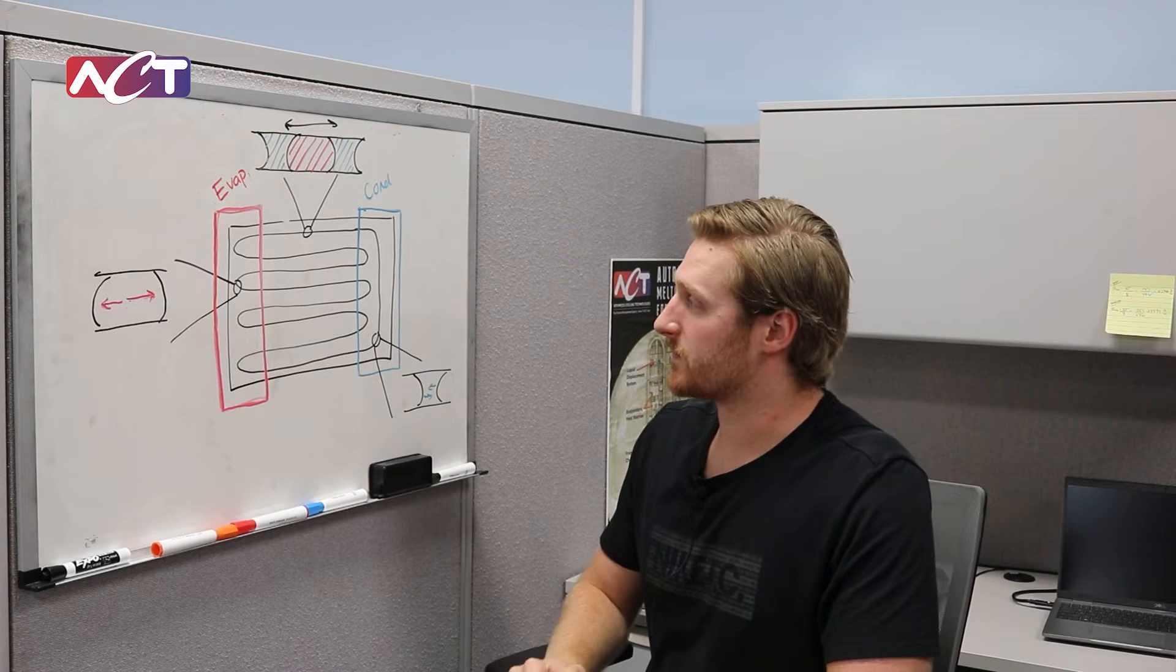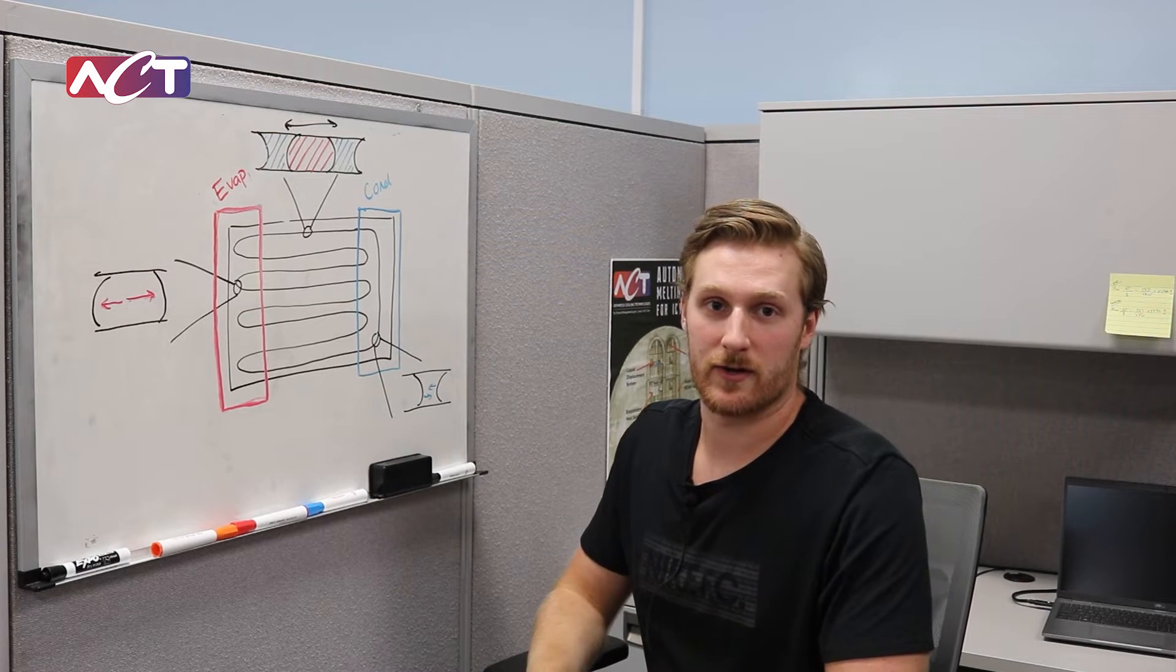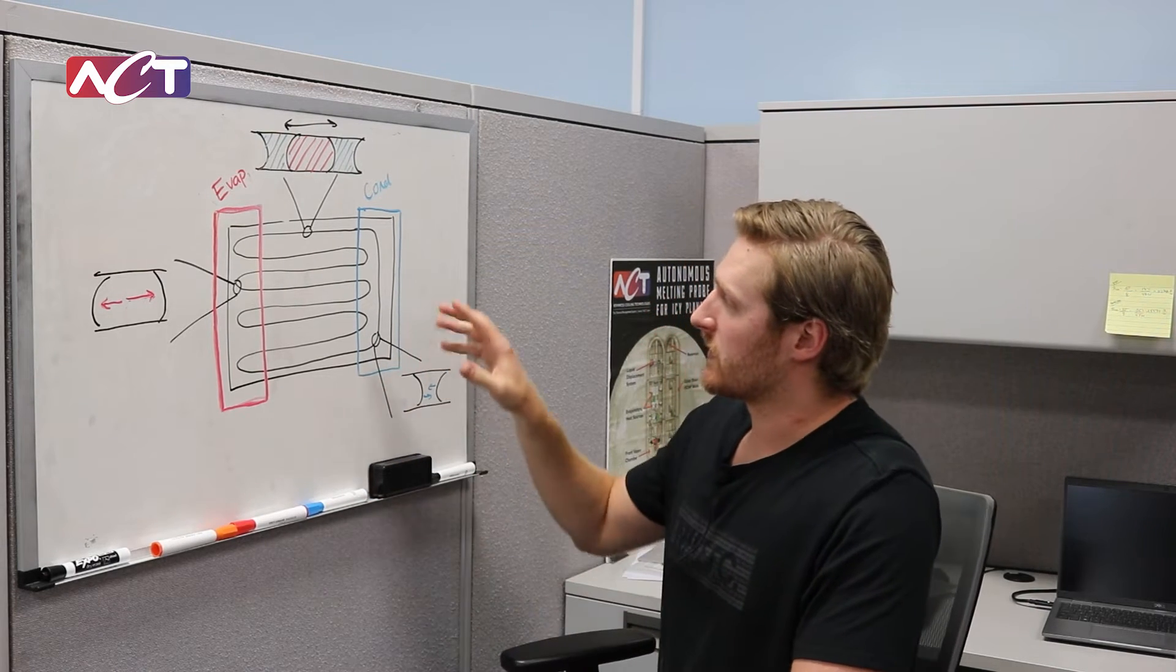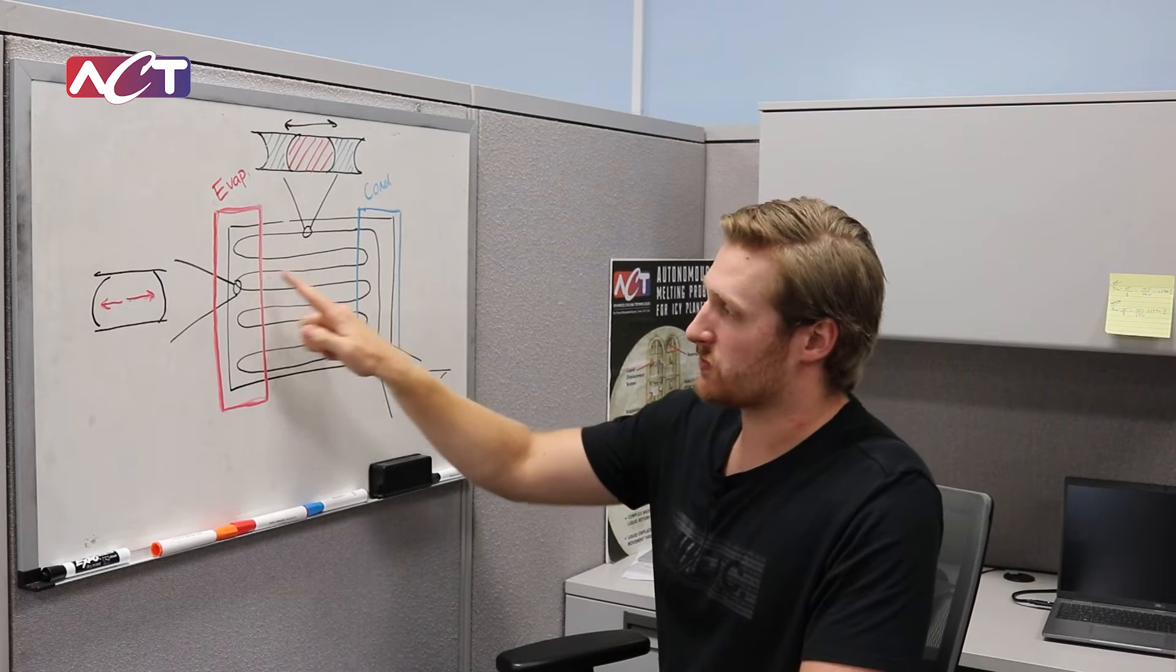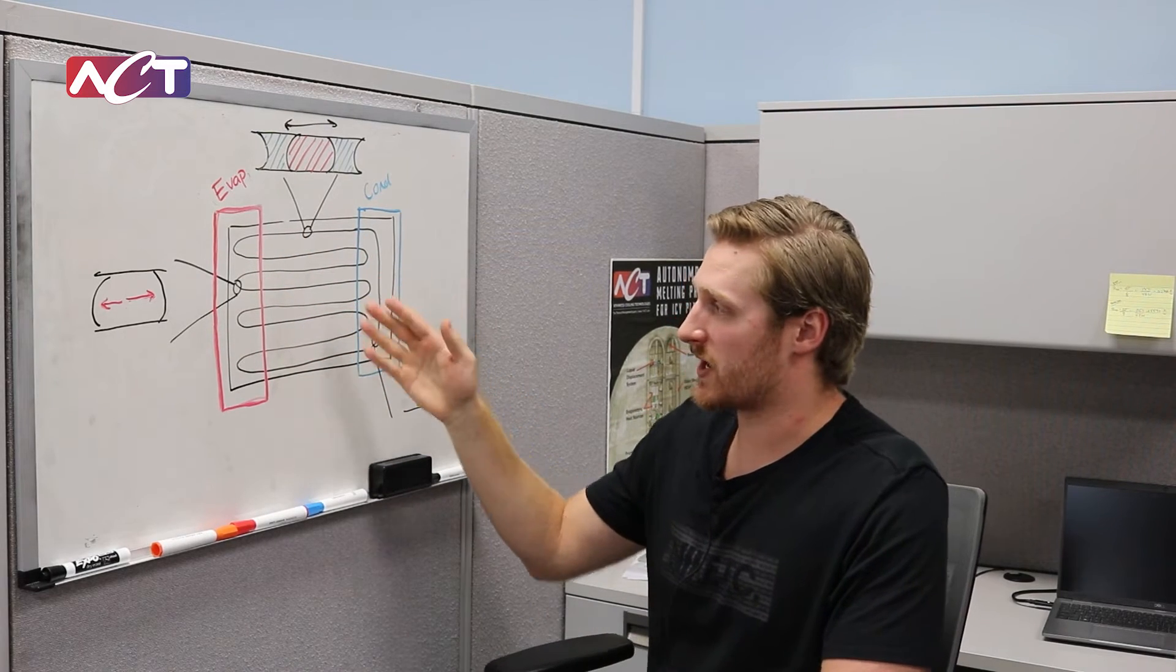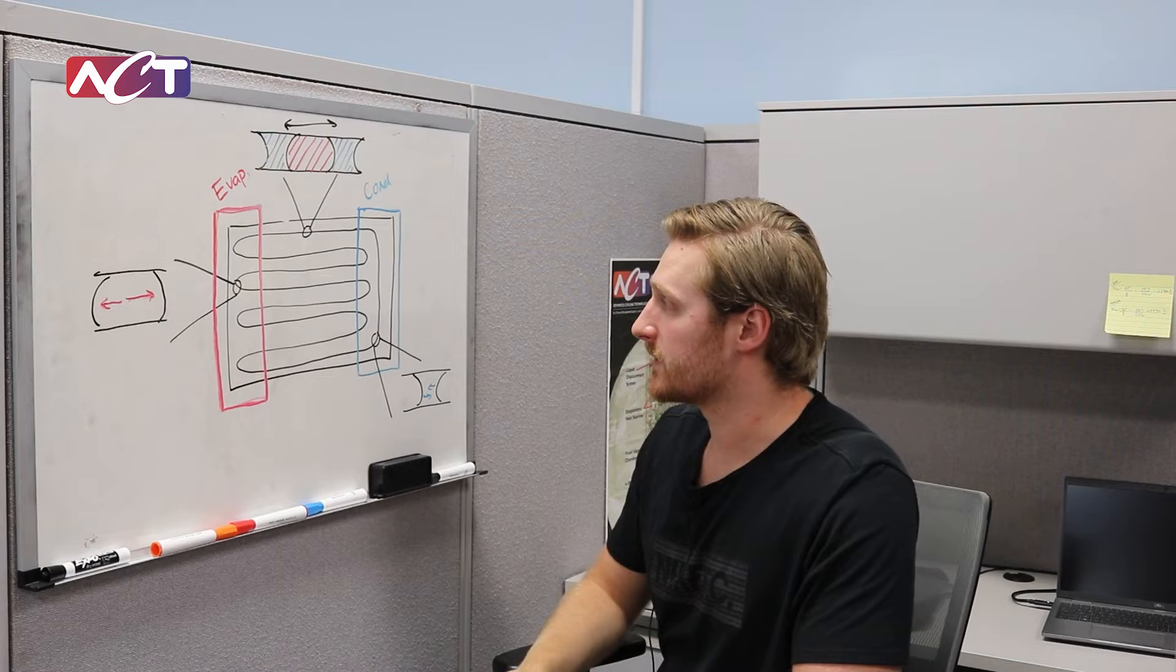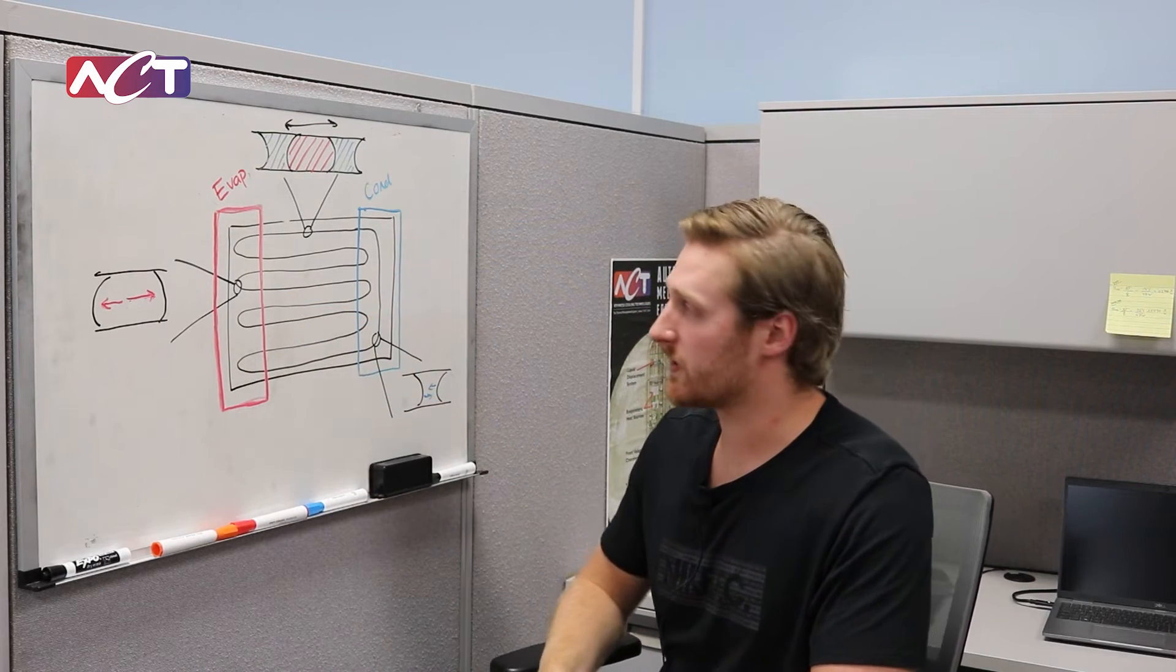Right here I have a small sketch of a pulsating heat pipe. These black squiggly lines here are the channels inside of the PHP and on the other side you have a condenser and an evaporator.